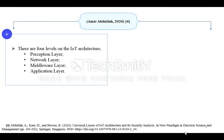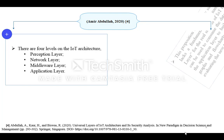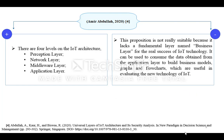There are four levels in the IoT architecture: perception, network, middleware, and application layer. This proposition isn't really suitable because it lacks a fundamental layer named the business layer, which is important for the real success of IoT technology.